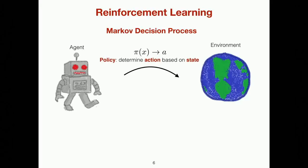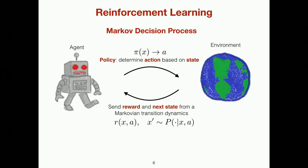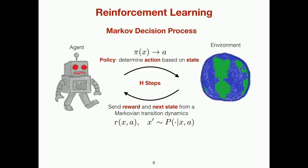Learning sequential decision-making can often be captured by the reinforcement learning framework, where we have two components: a learning agent and an environment. In the agent's mind, there's something called a policy, denoted Pi, that maps a state describing the current environment and outputs an action. The action is sent to the environment, which evolves accordingly, sending back a one-step immediate reward and generating a next state conditioned on the current state and action. We assume the transition dynamics is Markovian and unknown. We repeat this process for many steps, and the goal is to find a policy that maximizes the expected total reward.